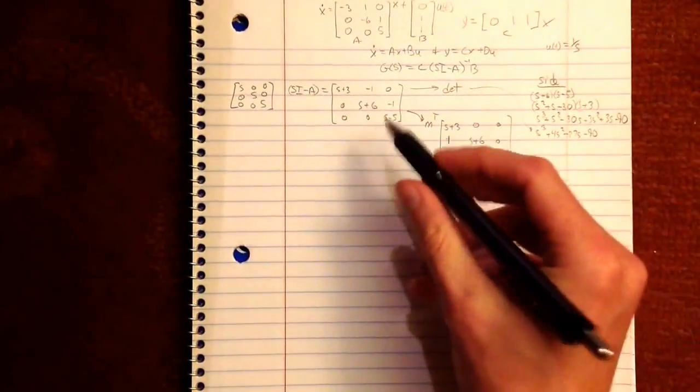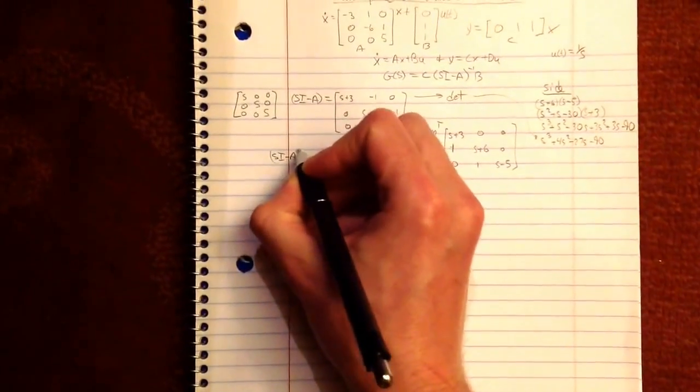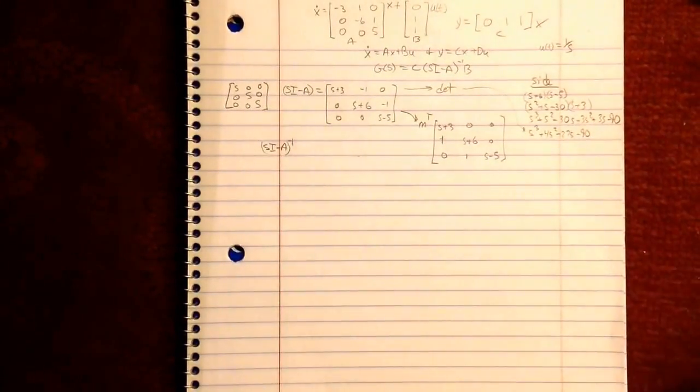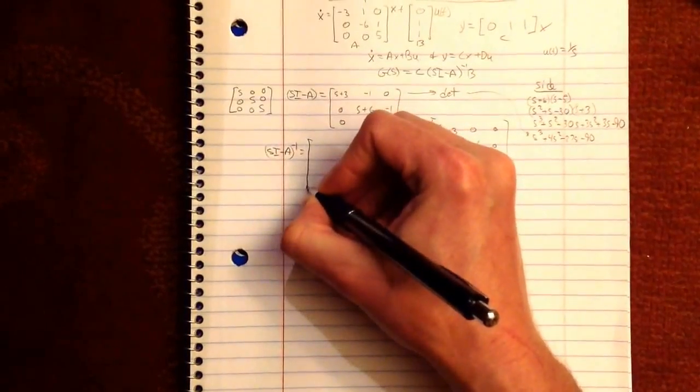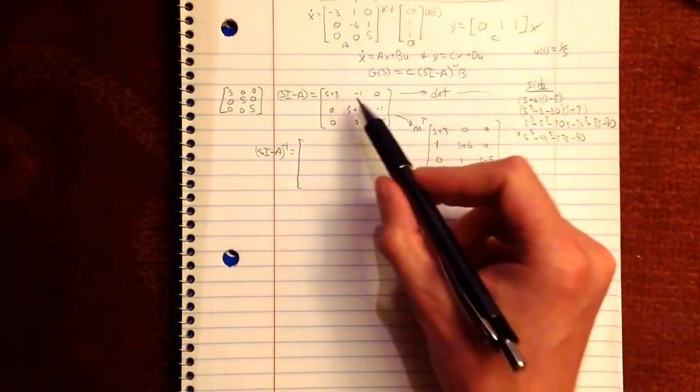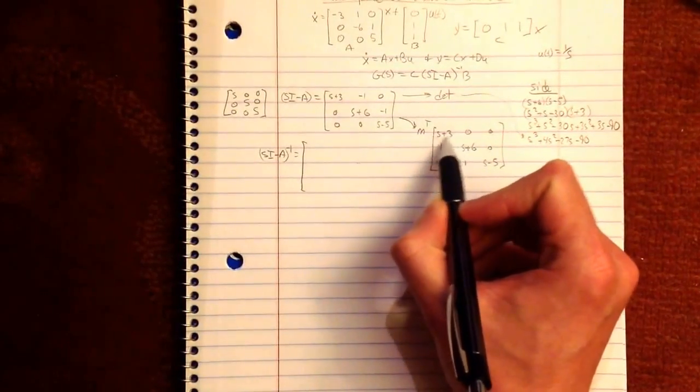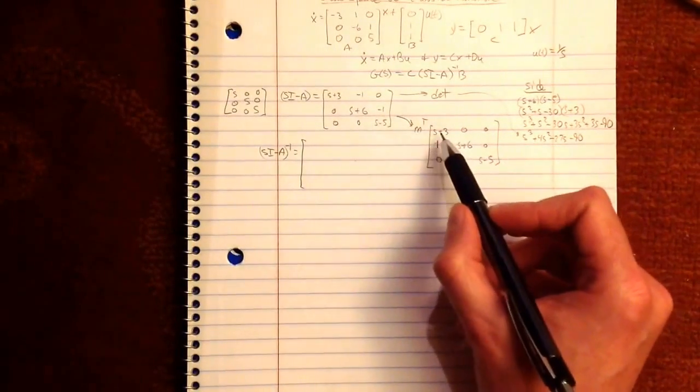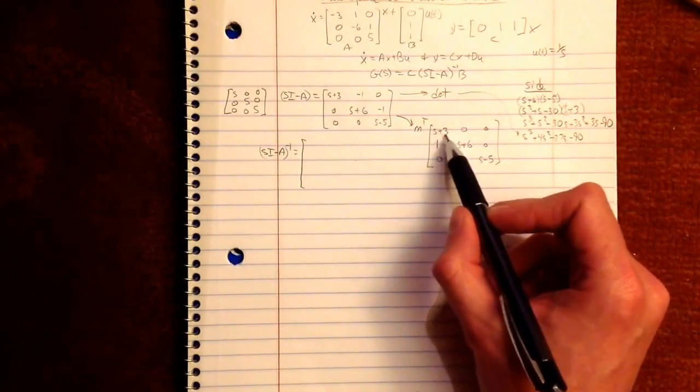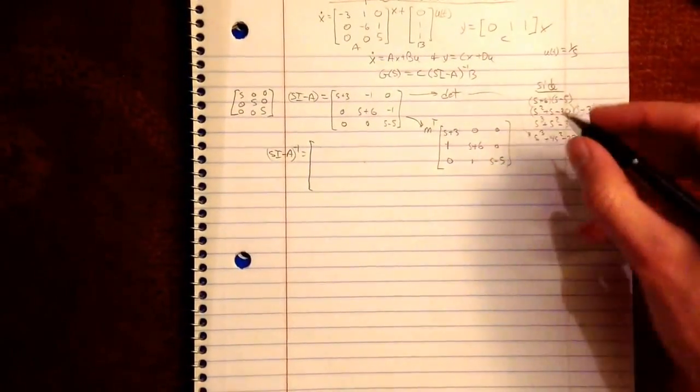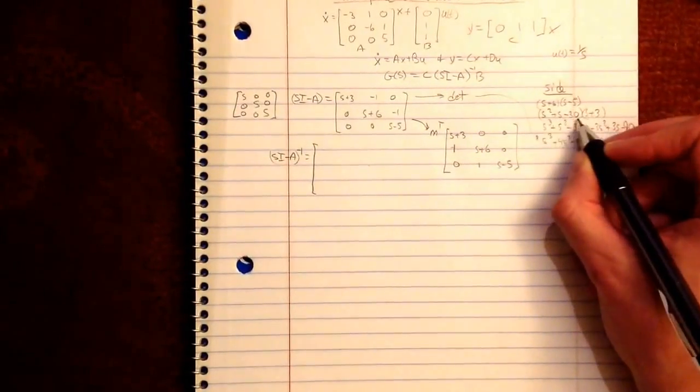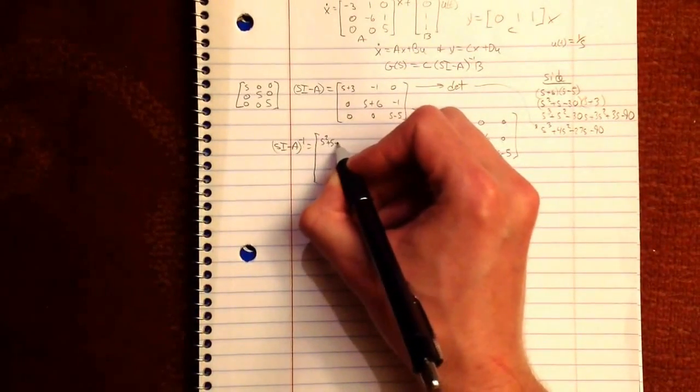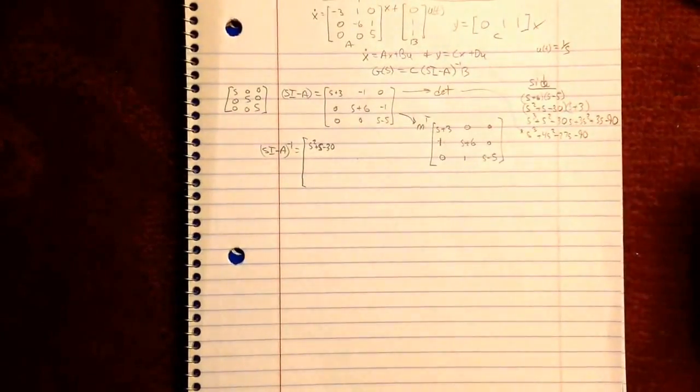Alright, so now you have your transposed matrix, but you need S I minus A inverse. So you've already got the denominator. That's this guy. The numerator, and it's a bit of a pain, just letting you know. It's taking the determinant of the transposed matrix, but ignoring the value you're multiplying. So up here where it was this times the determinant of these two, this value here is going to ignore this and just do this. So let's do that. So we know from up here that that value is this. And you're going to take that minus 0. Okay, so that means the first one is S squared plus S minus 30. Make sure your S's don't look like 5's, but inevitably they do.